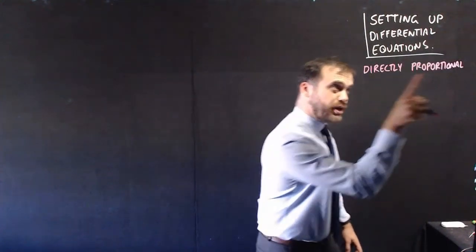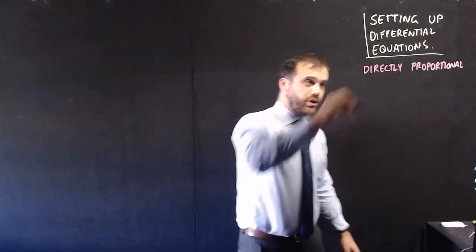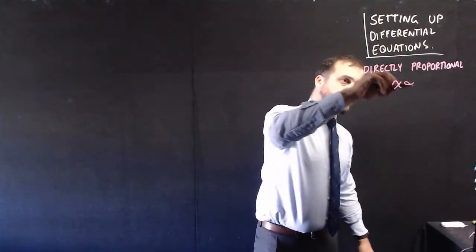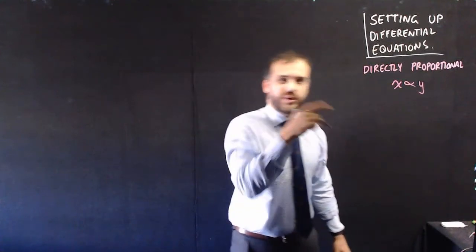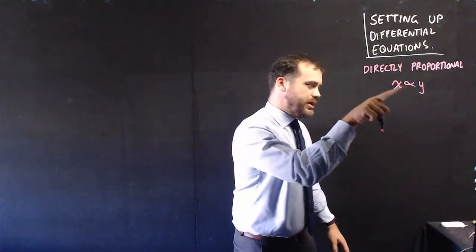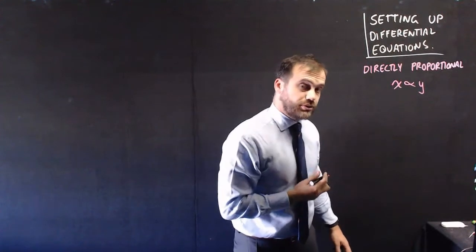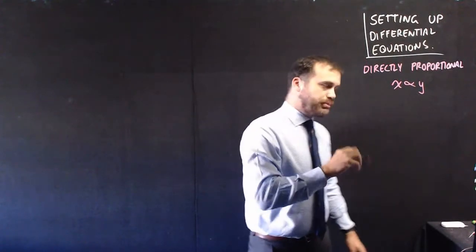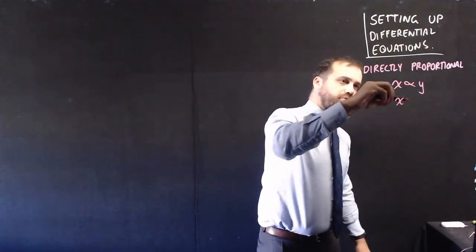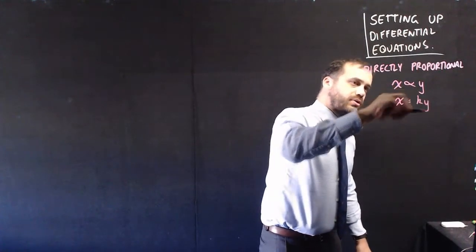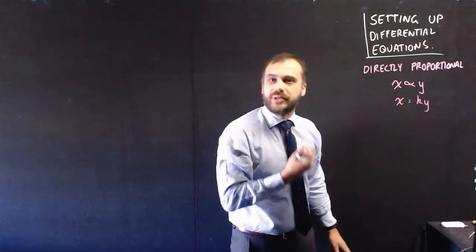So let's talk about something you already know about. If two things are directly proportional, we write it as x being directly proportional to y. The important bit here is this directly proportional to. Now if two things are directly proportional, as an equation we can write x equals ky, where k is some number.